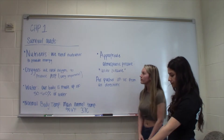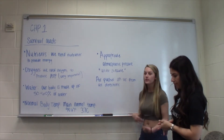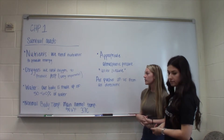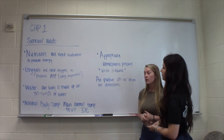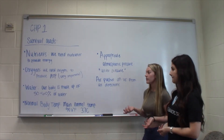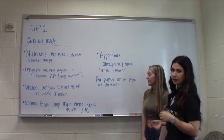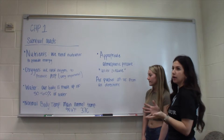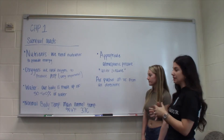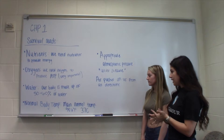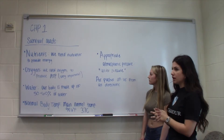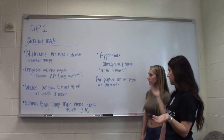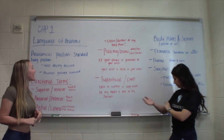Survival needs: nutrients provide energy to our body. We use oxygen to produce ATP, which is super important. Water is essential since our body is made up of 50 to 60 percent water. We have to maintain a normal body temperature — not too cold or too hot. Normal body temperature is 98.6 degrees Fahrenheit, or 37 degrees Celsius. Appropriate atmospheric pressure pushes on us from each direction per square inch to keep us grounded.